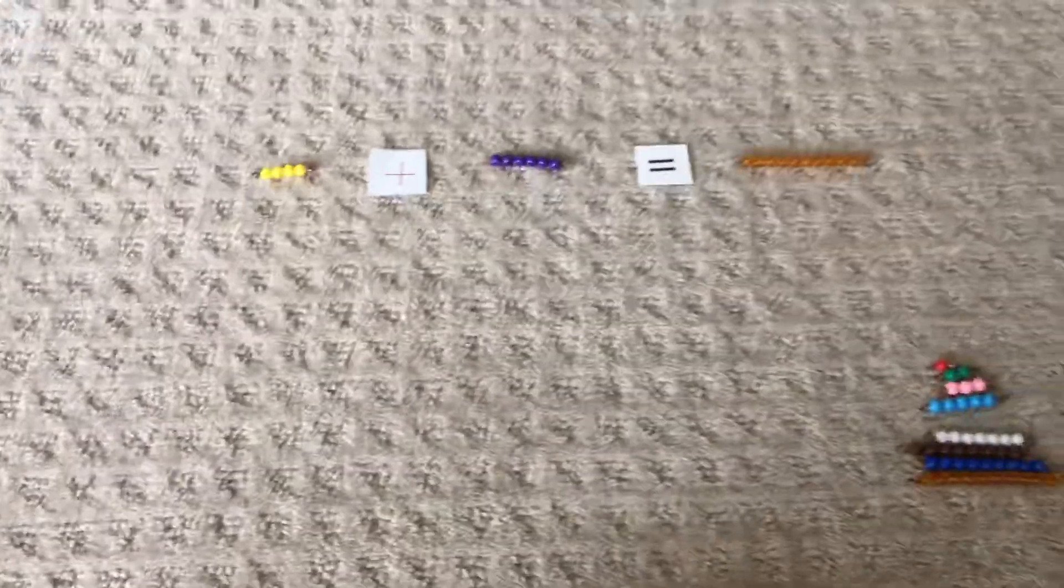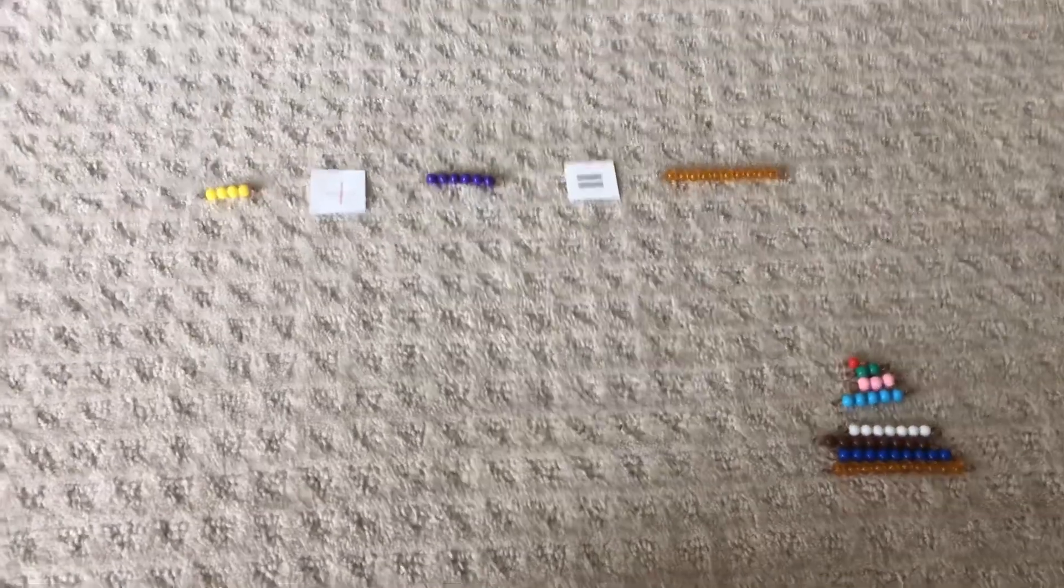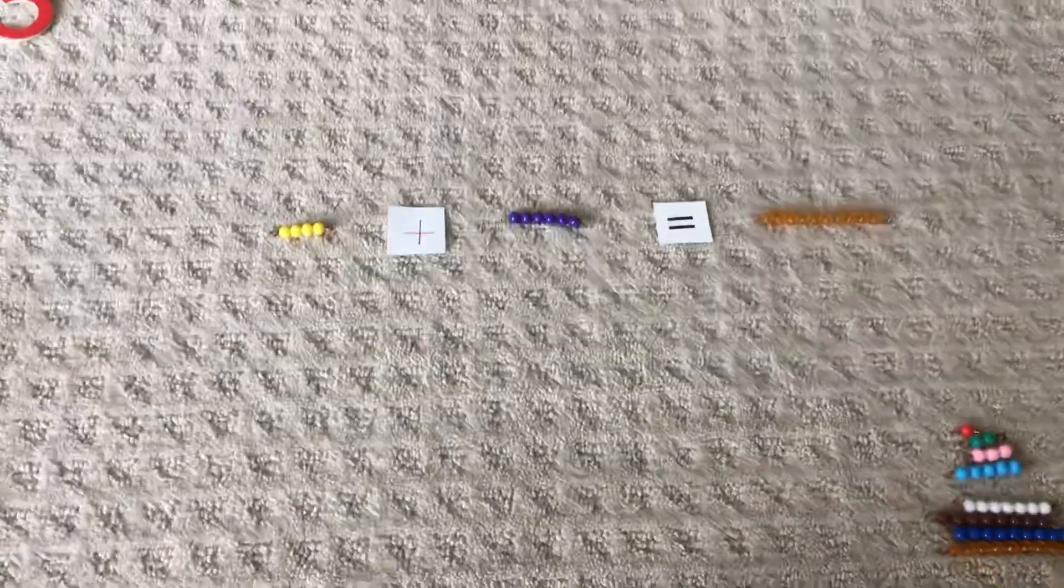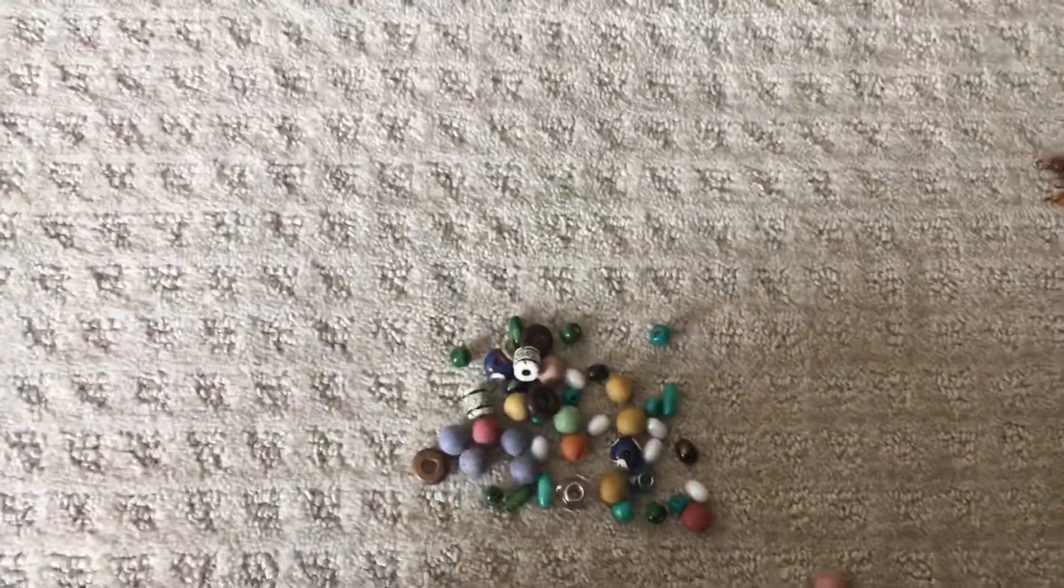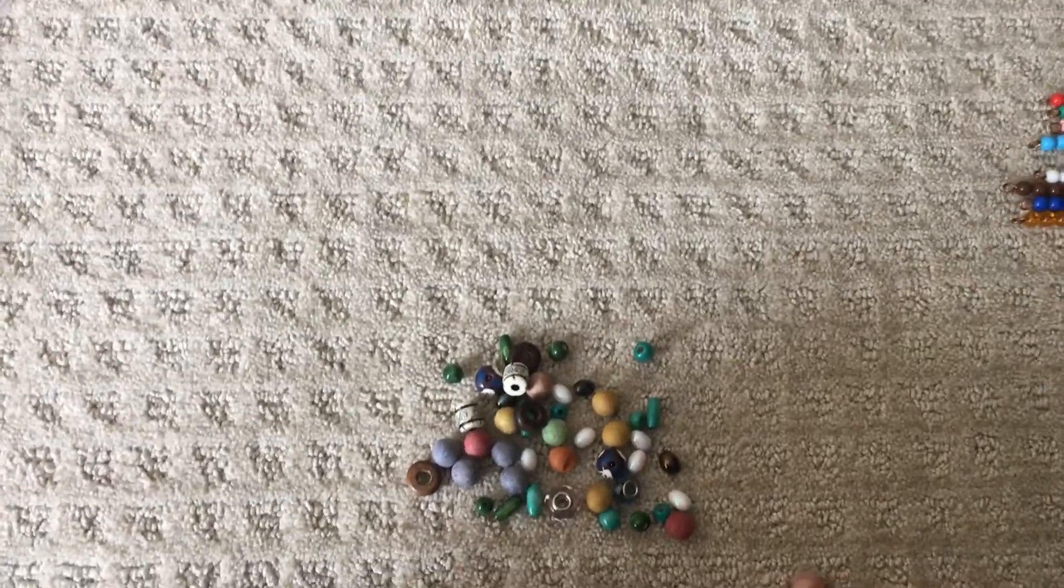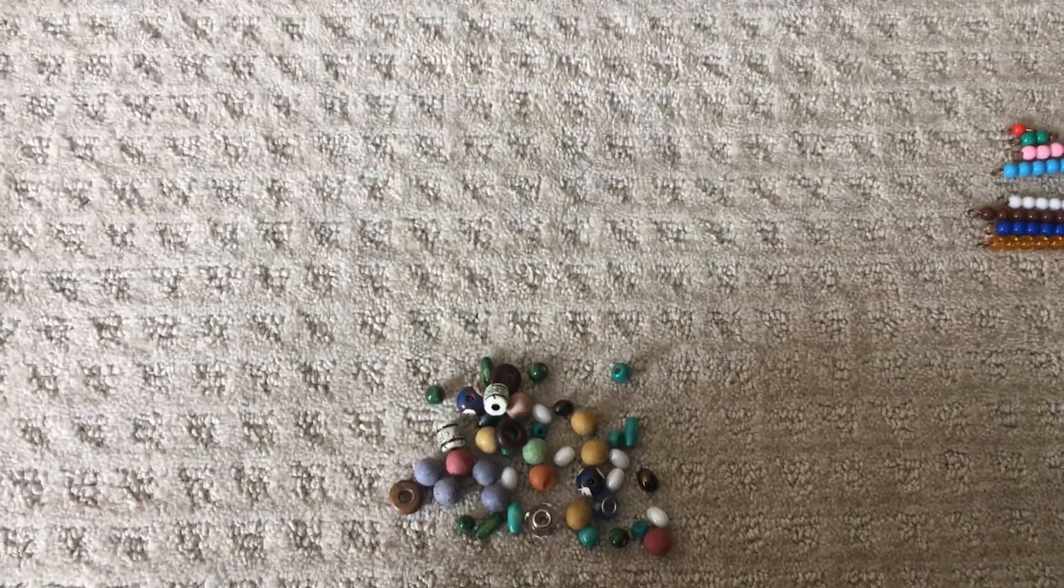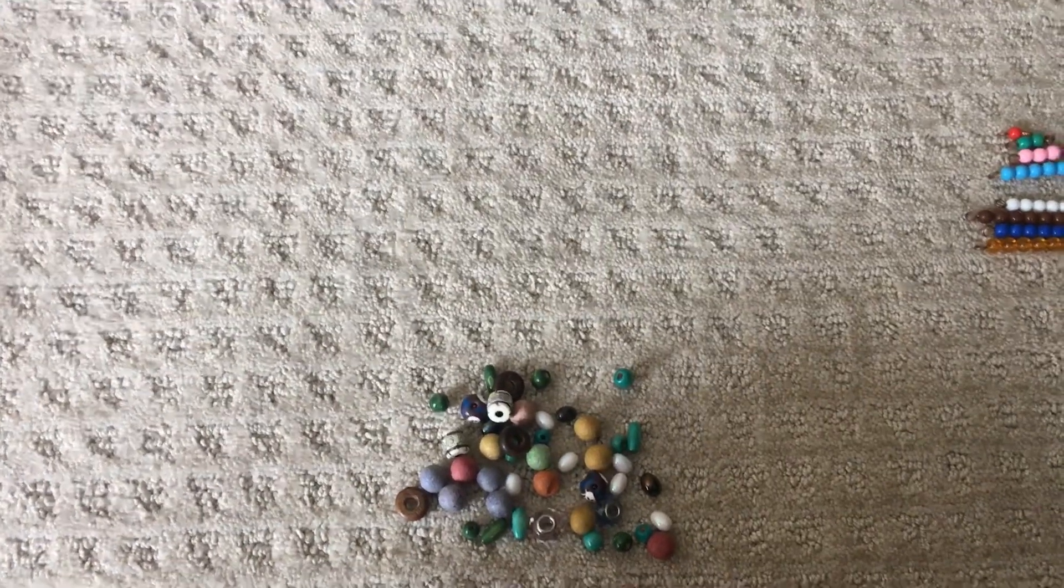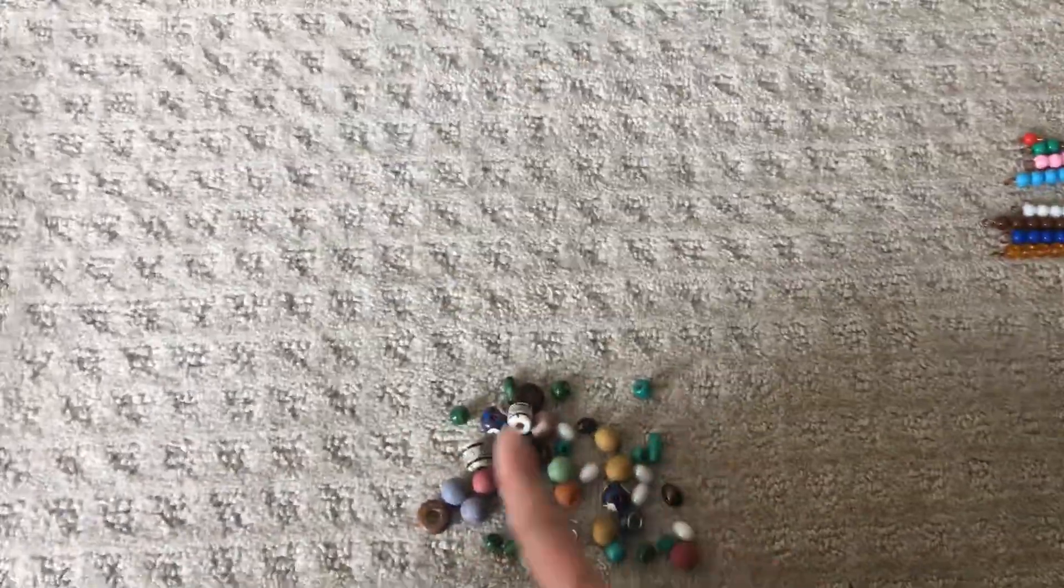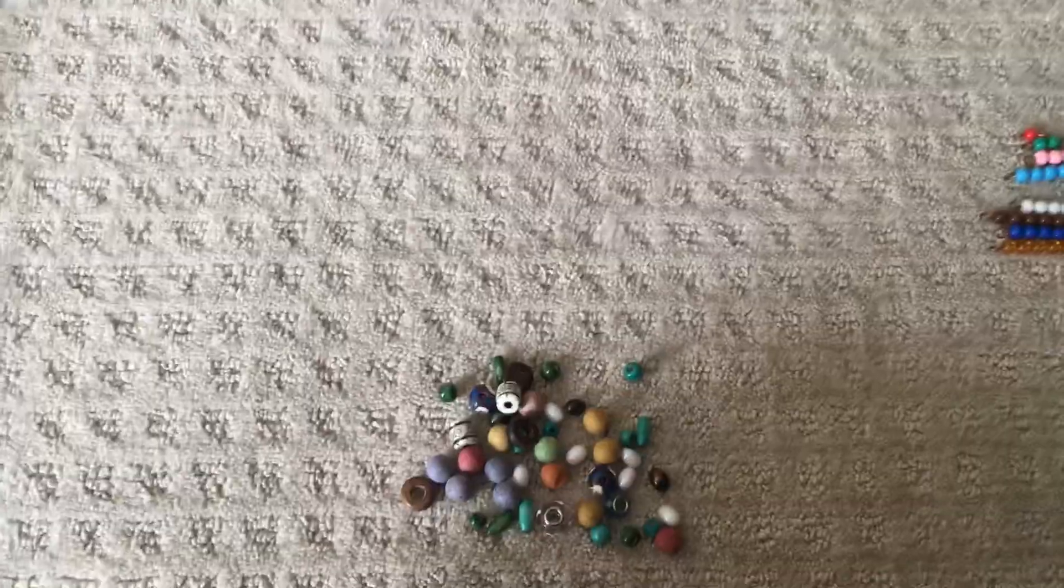So let's try another one. And this time, I'm going to show you what you can do if you don't have these pretty little Montessori beads. Okay. So down here, I have my pile of just jewelry beads that I found. You can use things like this. You could use dried beans. You can use small rocks that you found outside. Anything you have to count. And you'll notice they're all different. So it doesn't really matter that they're different. It's nice if they're all the same, but you know, you got to work with what you have, right?